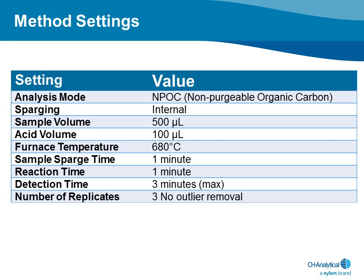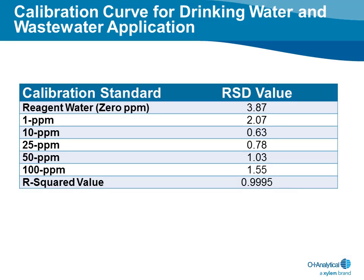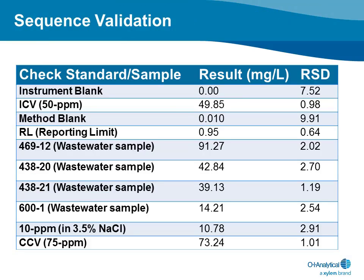Sparge time can be kept to one minute since the sparge flow on the 1080 is at 300 mL per minute. A typical calibration curve for the Model 1080 shows linearity well within all applicable method requirements over a large range of TOC concentrations. These results were obtained without outlier removal — from three consecutive injections of a standard at each calibration point. A validation sequence typical of a service contract, municipal, or industrial laboratory demonstrates the instrument's performance.